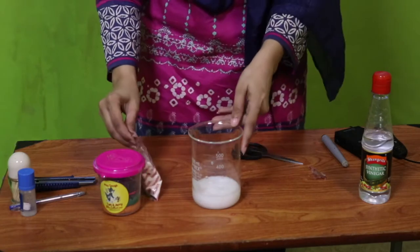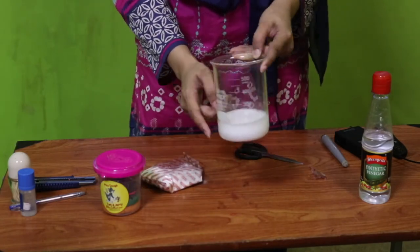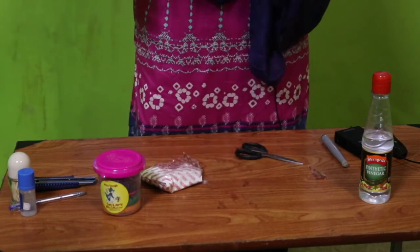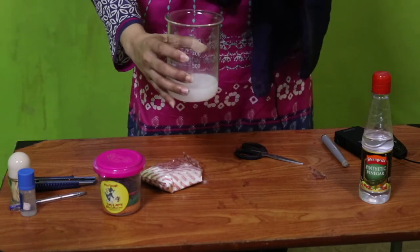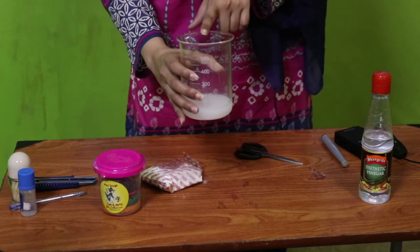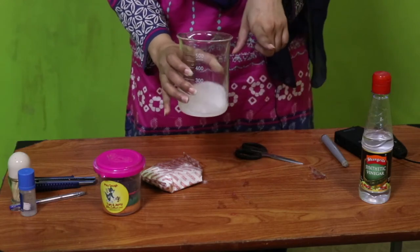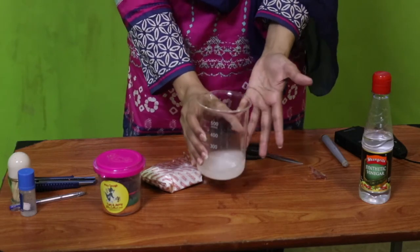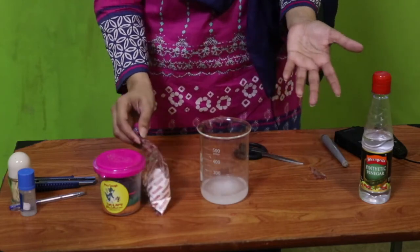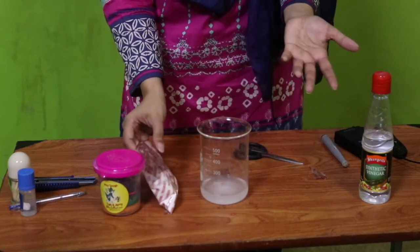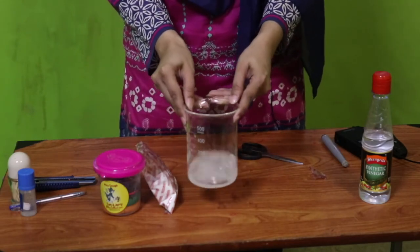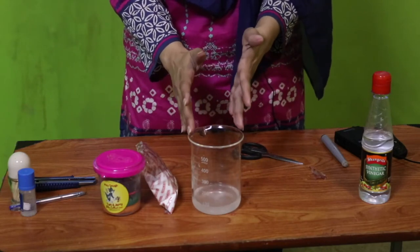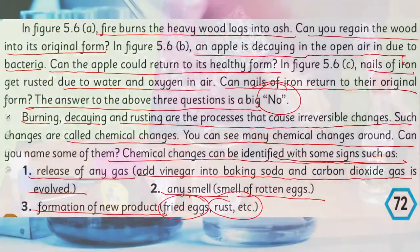When I add baking soda into the vinegar, can you observe something? Do you see fizziness, bubbling inside? I can also feel that some gas is being evolved from inside. Gas is being released — this is a chemical change. When any new product is formed, it is a chemical change. In rusting, a new product is also formed and it is irreversible. When you fry eggs, a new product forms and it is irreversible. Similarly, when baking soda is added to vinegar, a new product — carbon dioxide gas — is released.